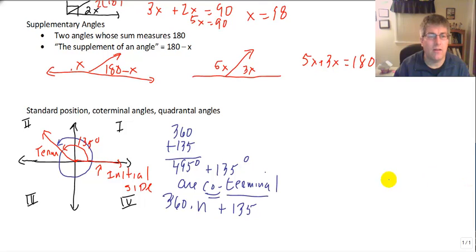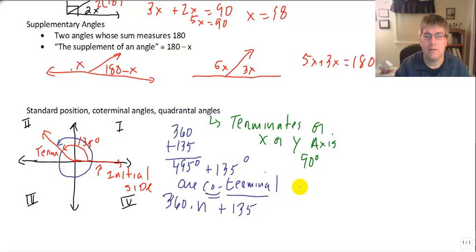So a quadrantal angle, on the other hand, is one that ends right on the x or y axis. Its terminating side on the x or y axis, which means our quadrantal angles are every 90 degrees. 90, 180, 270, and 360, and then of course times N, times the number of times around. And we could go in the opposite direction too. We could have a negative quadrantal angle, and start here and end right there. So negative 90, negative 180, negative 270, negative 360, if we are going in the clockwise direction.